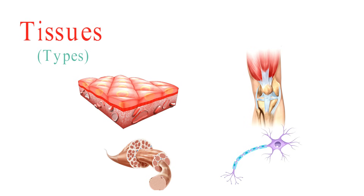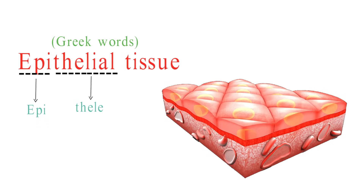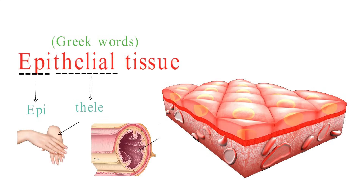Let's discuss them one by one. Epithelial tissue is one of the four basic types of tissue in the body, and it plays a vital role in many different functions. The term epithelium comes from the Greek words epi and theil. This is the thin tissue forming the outer layer of a body's surface and lining the alimentary canal and other hollow structures.